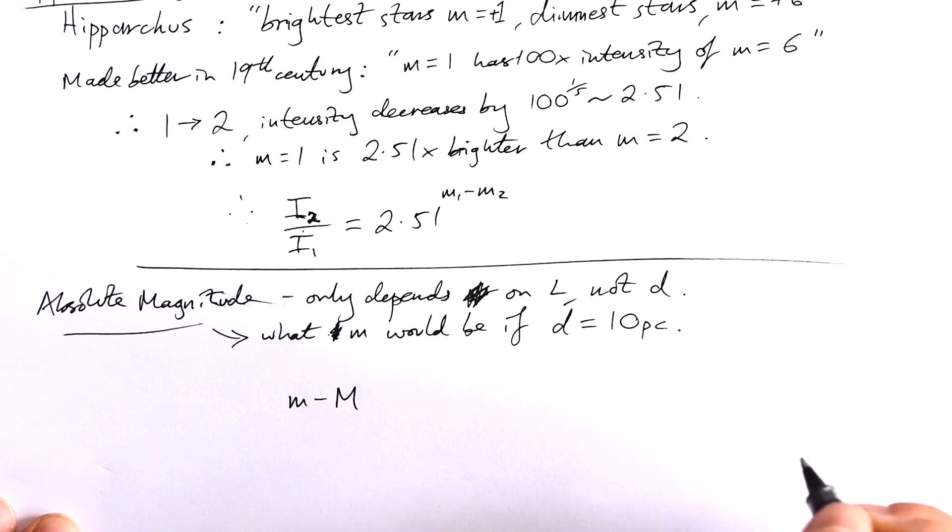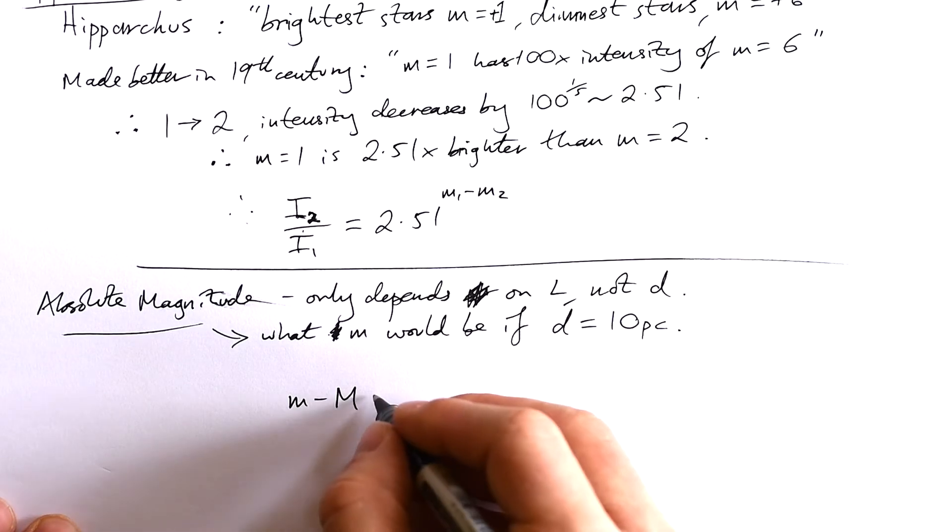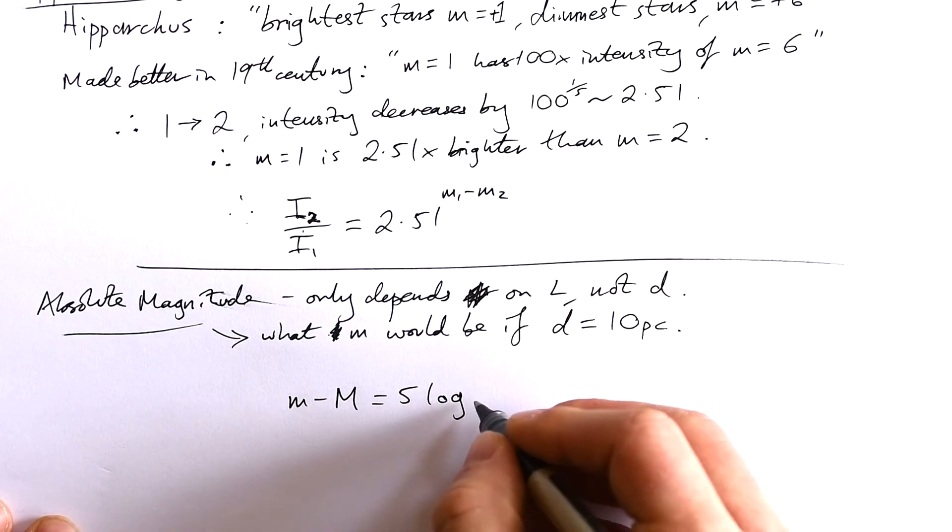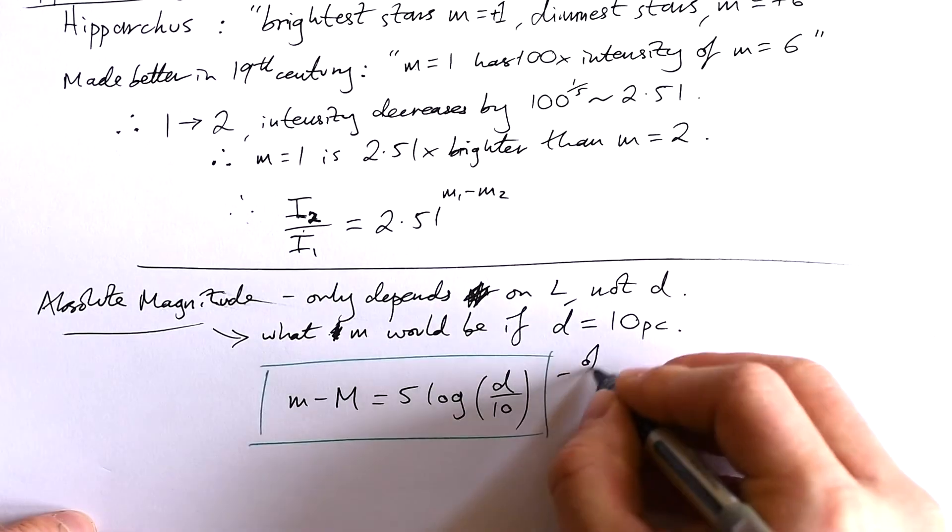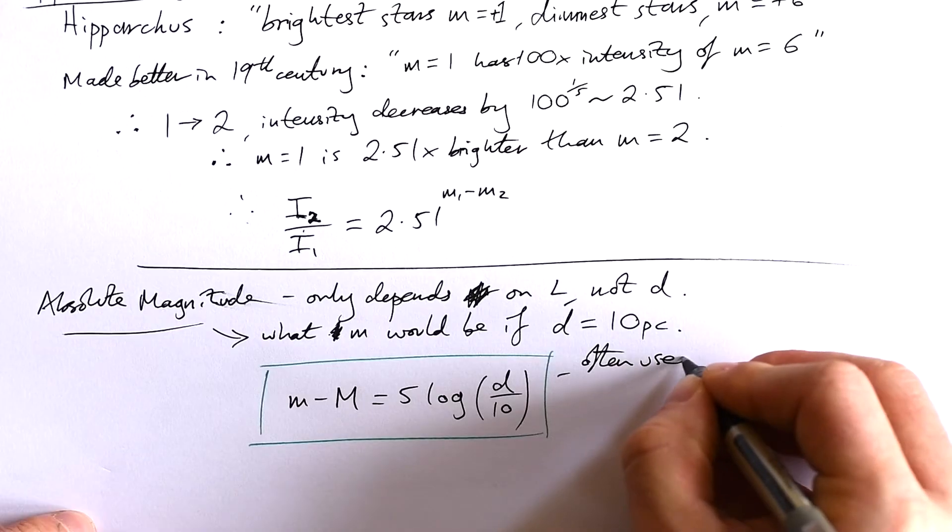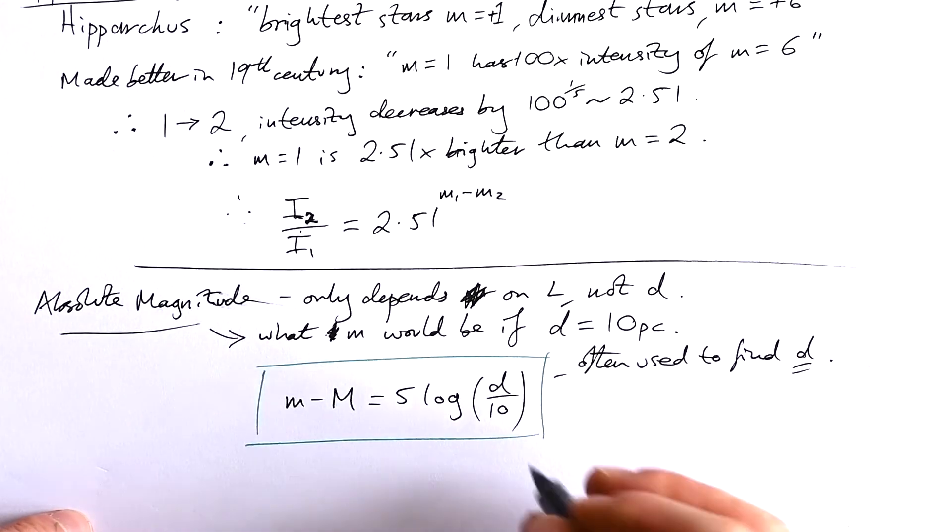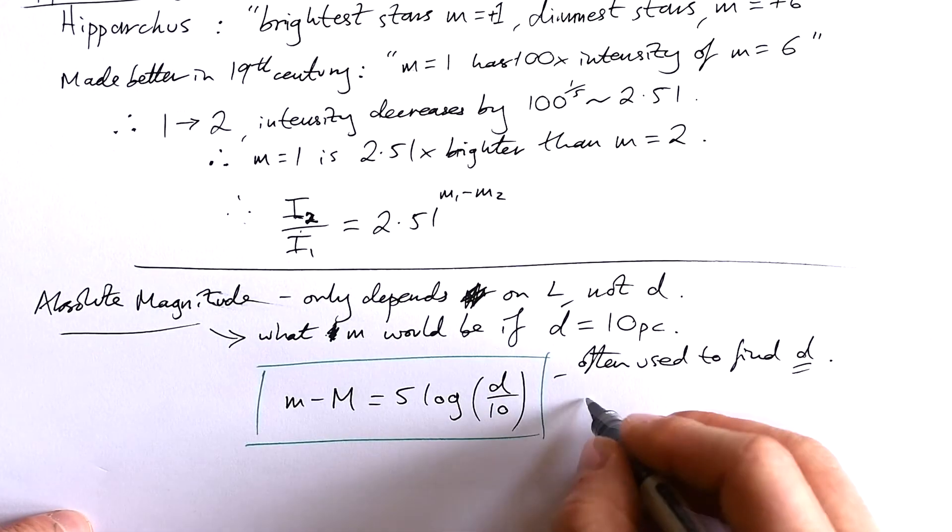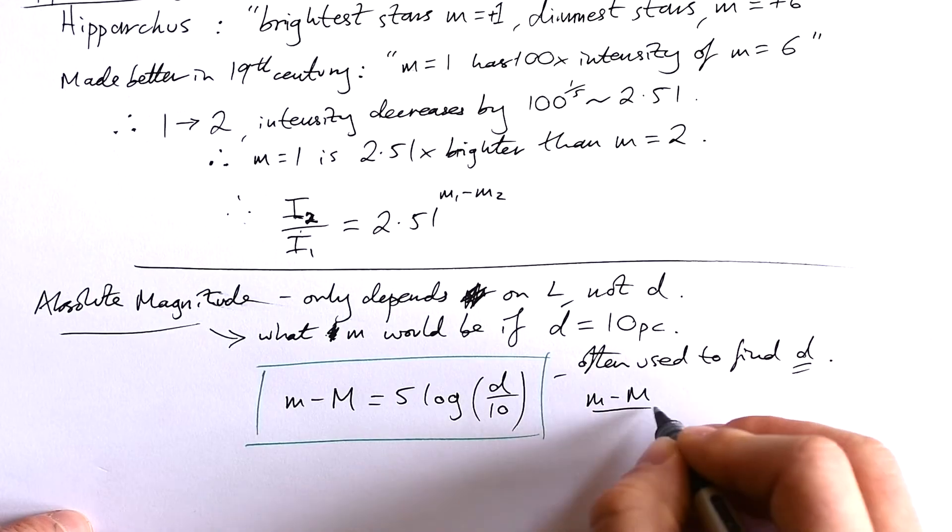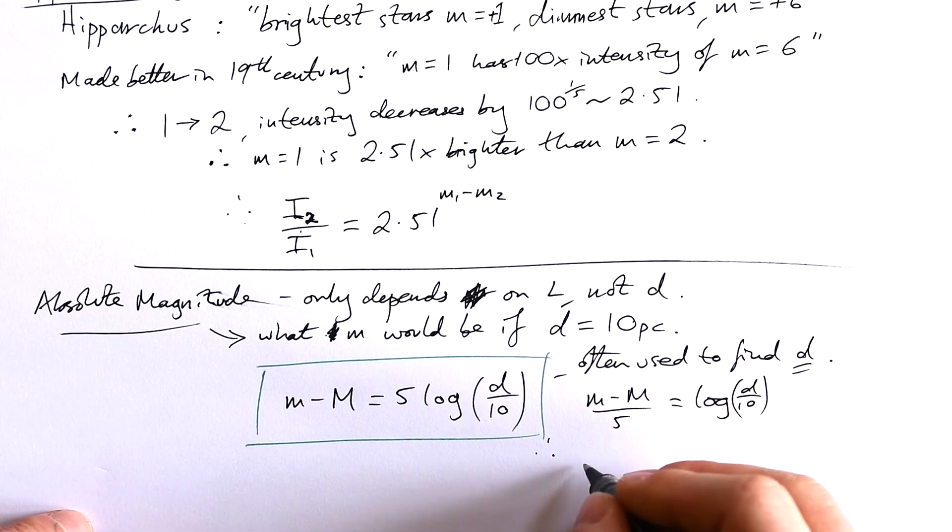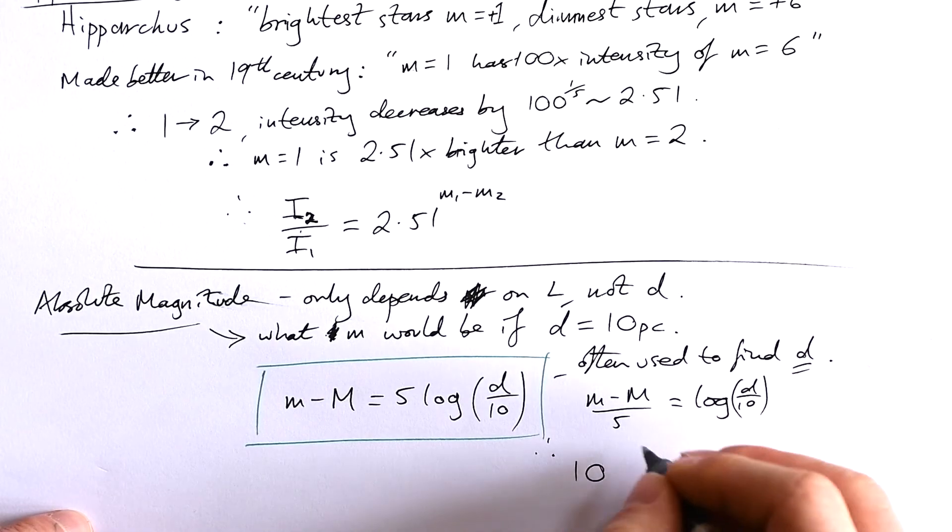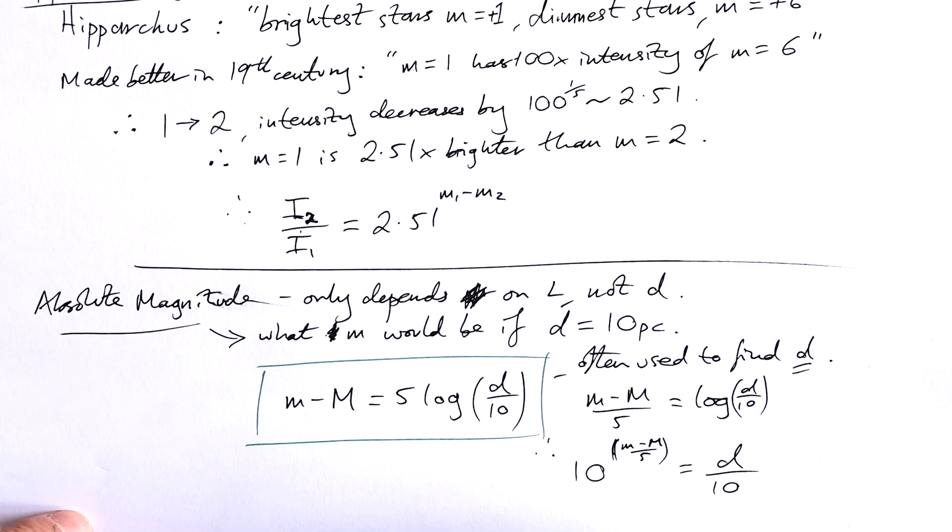Here's the equation: apparent magnitude minus absolute magnitude equals five times log base 10 of distance divided by 10. This is often used to find distance. To rearrange: (m-M)/5 equals log(d/10), therefore d/10 equals 10 to the power of (m-M)/5.